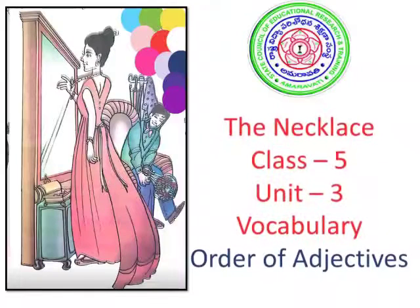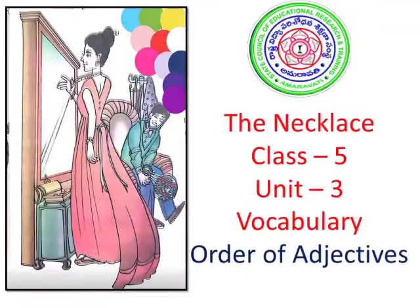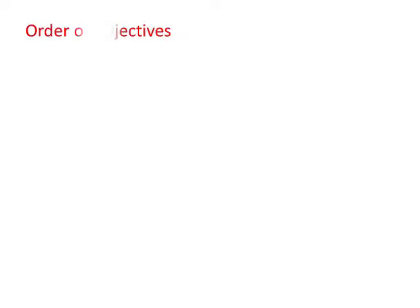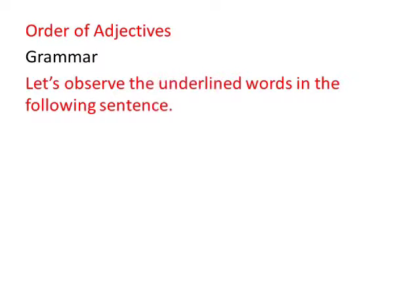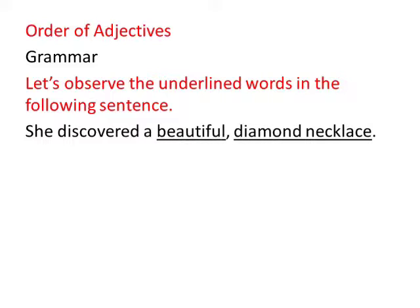The Necklace — Class 5, Unit 3: Vocabulary — Order of Adjectives. Let's observe the underlined words in the following sentence: She discovered a beautiful diamond necklace.